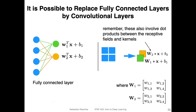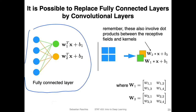So on the left hand side, I'm showing you for reference a fully connected layer that we have seen before. In order to fit it onto the slide, this fully connected layer has exactly four inputs and two outputs. So let's start with the green one. All the connections in green are one weight vector, let's call it w one, and the output here is the green dot.